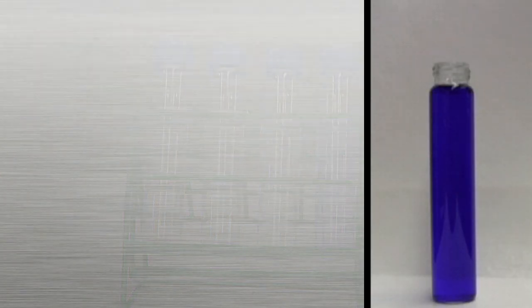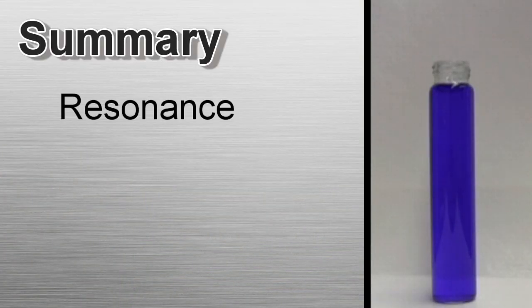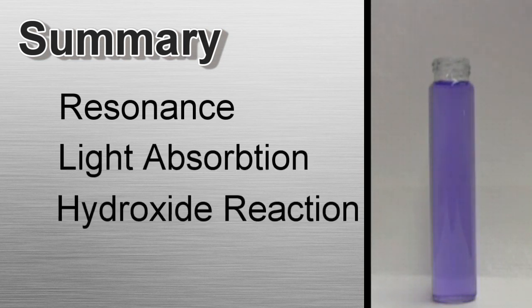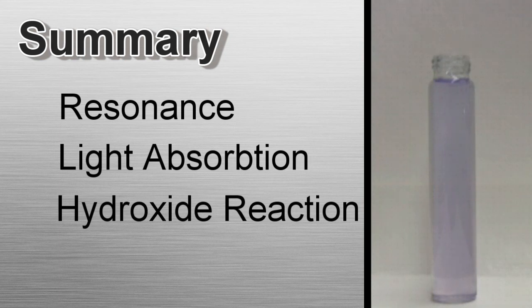In summary, crystal violet appears violet because the resonance in the structure allows it to absorb light in the visible spectrum. When the crystal violet molecule finds a hydroxide ion, they react, the resonance is disrupted, and the crystal violet can no longer absorb light in the visible spectrum. Therefore, it's decolorized.